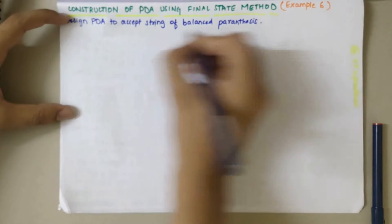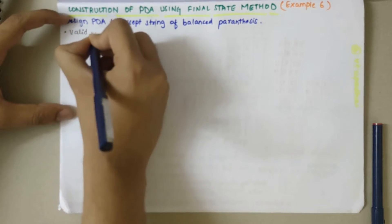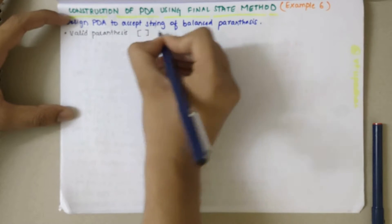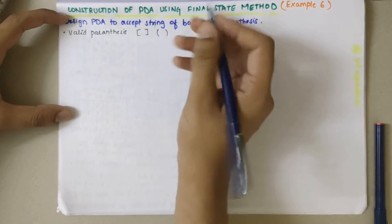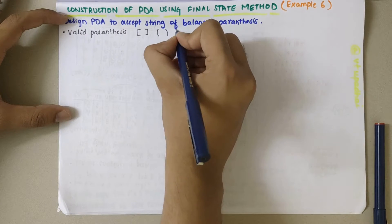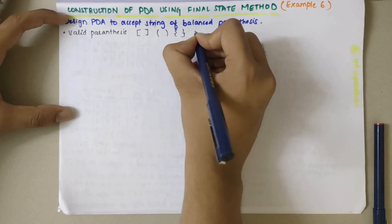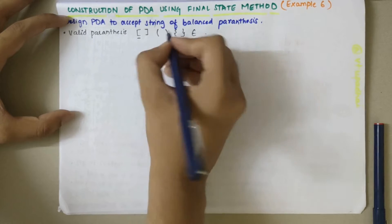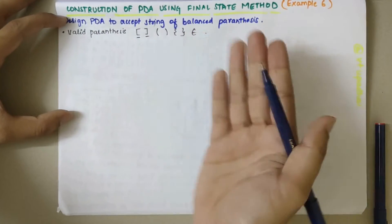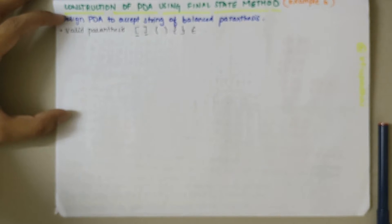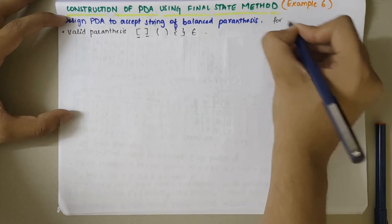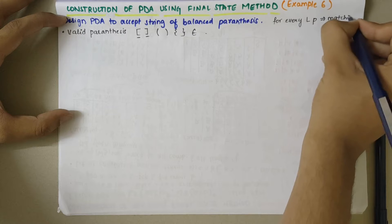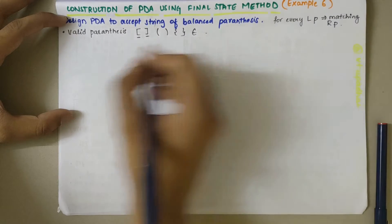Here, firstly we need to understand that valid parentheses comprise of square brackets, normal brackets, and curly braces, along with epsilon. For every left parenthesis there has to be a matching right parenthesis — that is what this language basically says.